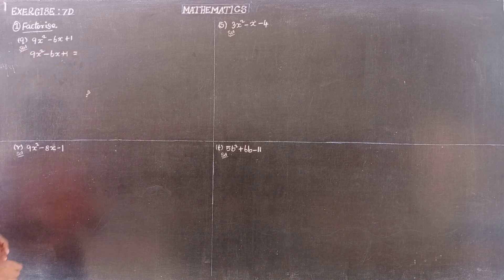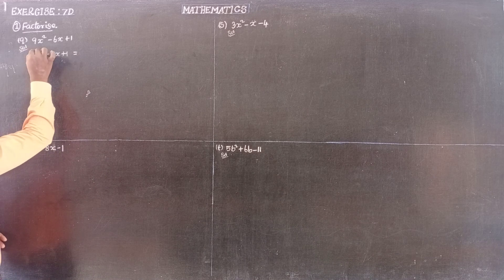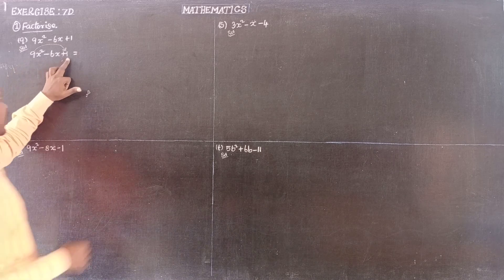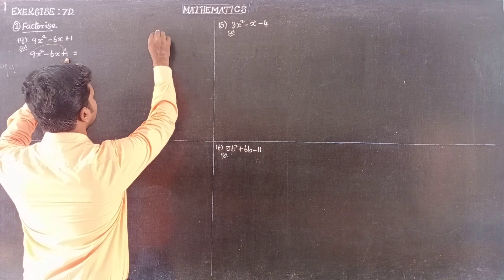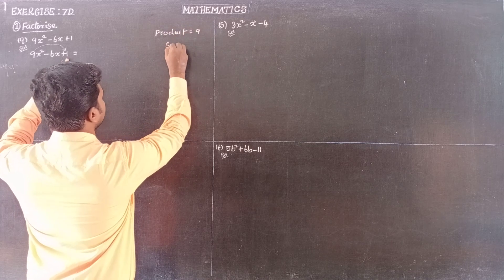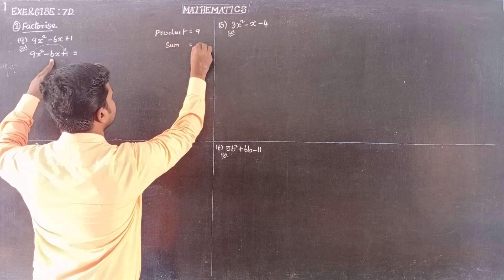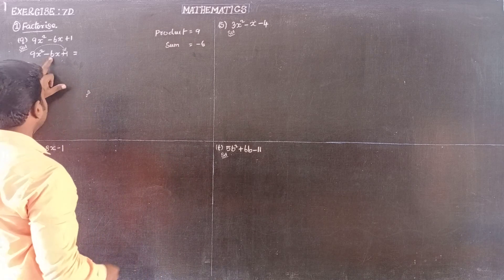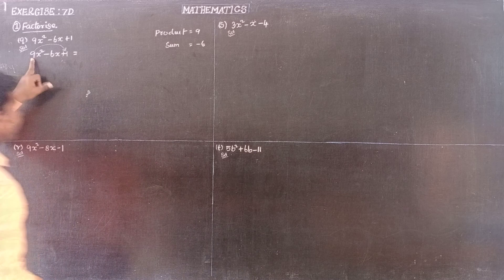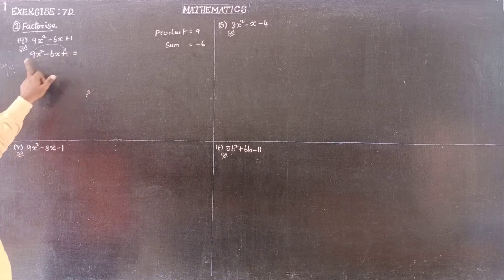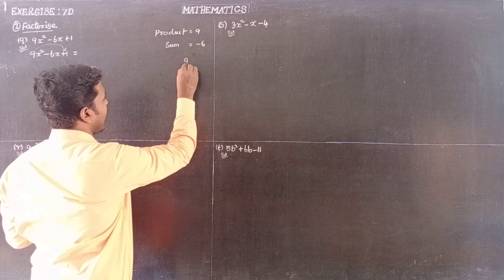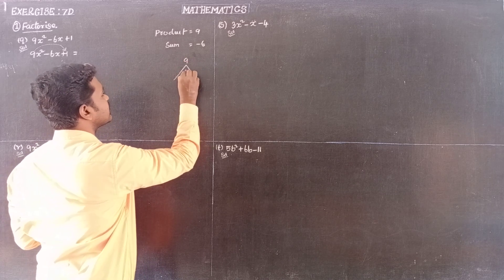To factor this, the coefficient of x squared is 9. We need two numbers whose product equals 9 multiplied by the constant 1, which is 9, and whose sum equals the middle term coefficient, minus 6.